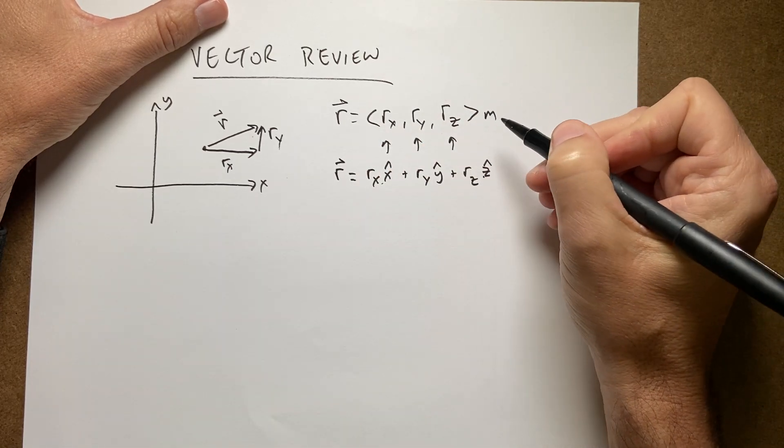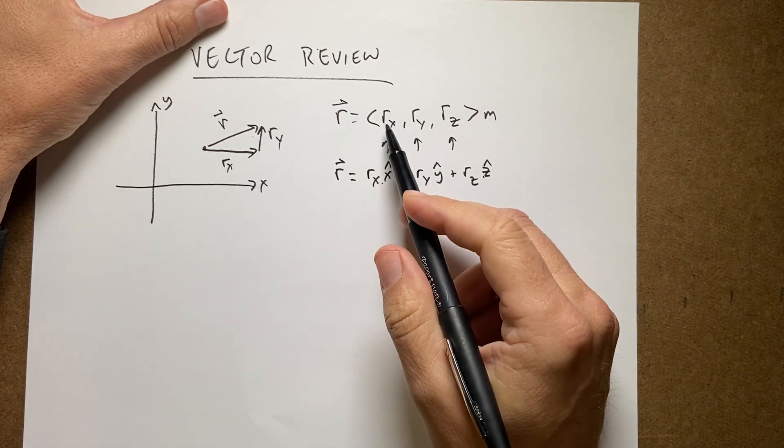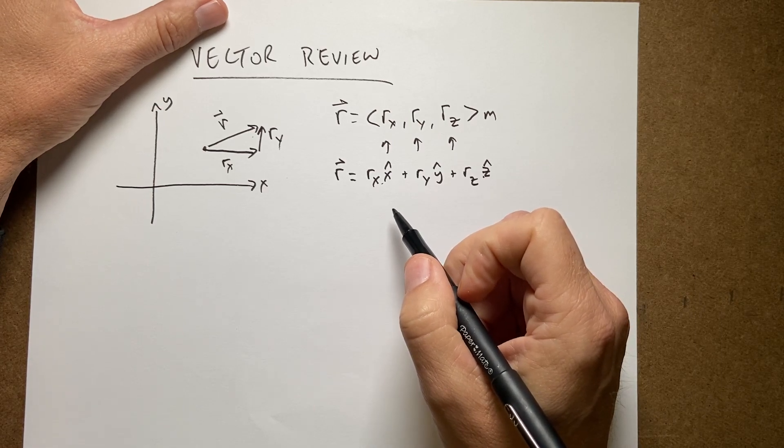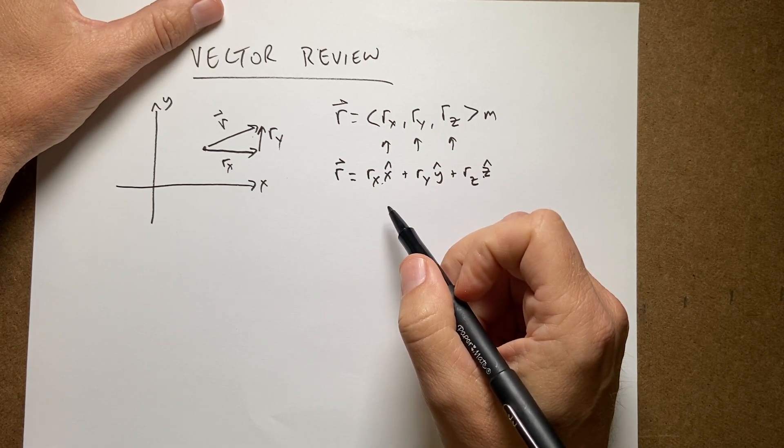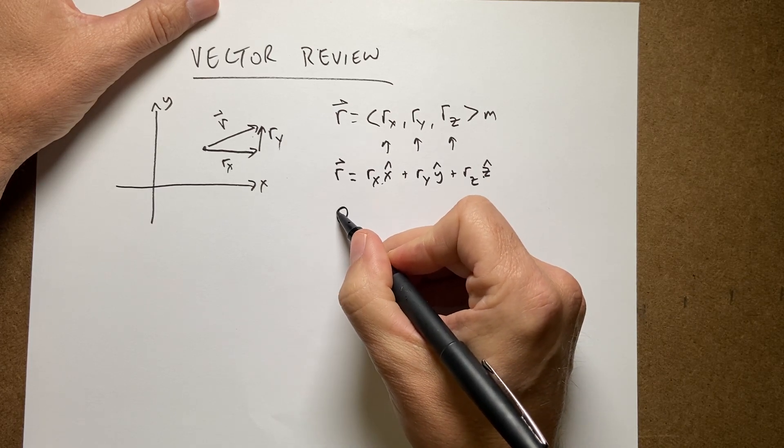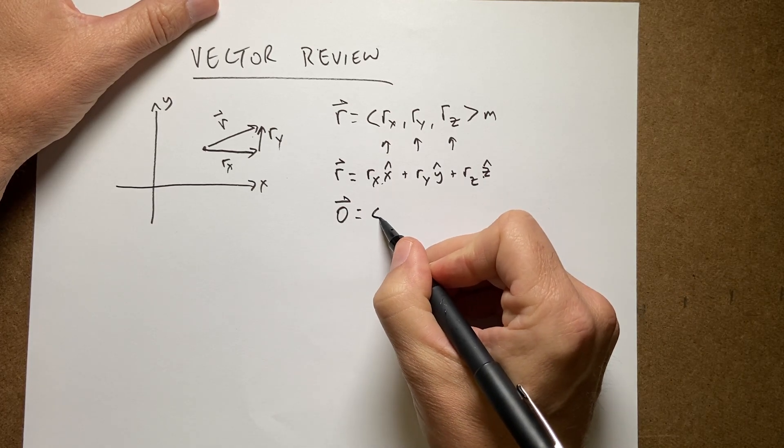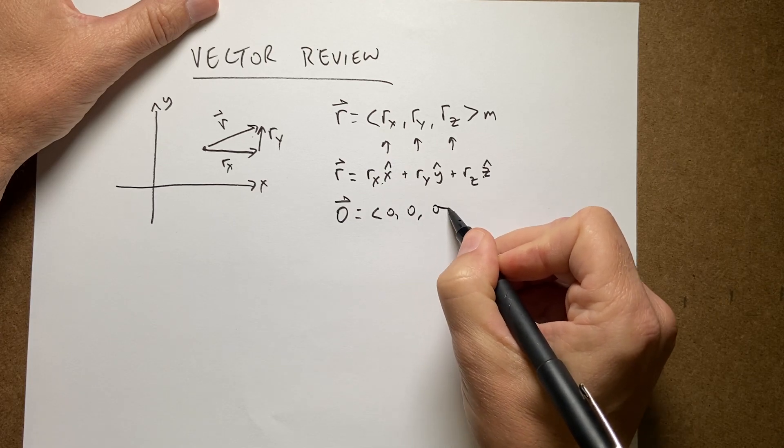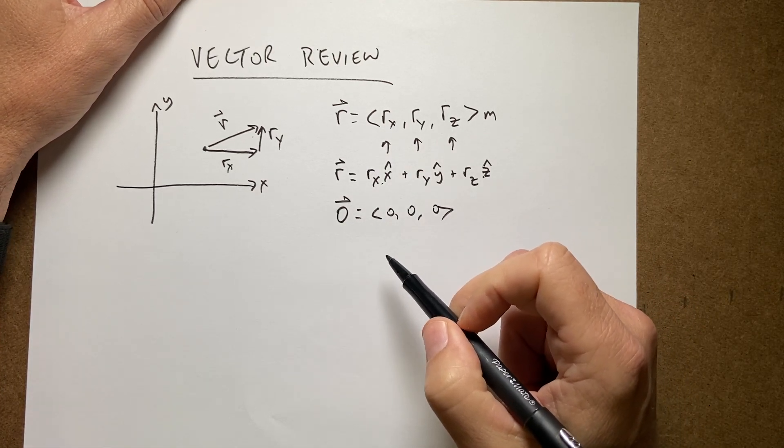Another important point, vectors have units. Just because they have those things doesn't mean they don't have units. They do. Another important thing while I'm at it, there is such thing as the zero vector, and it's just zero, zero, zero, which is different than the number zero.